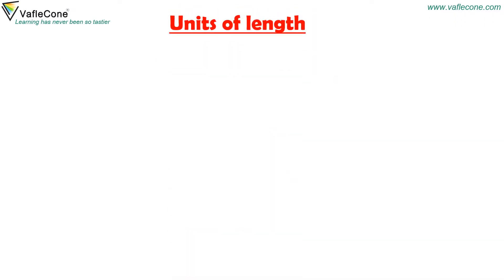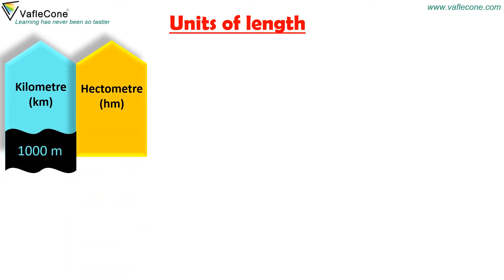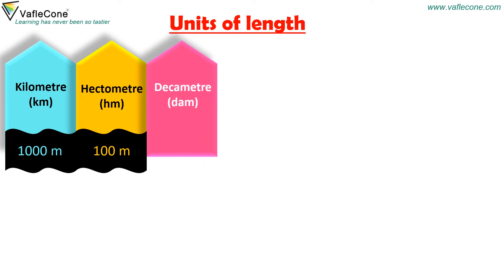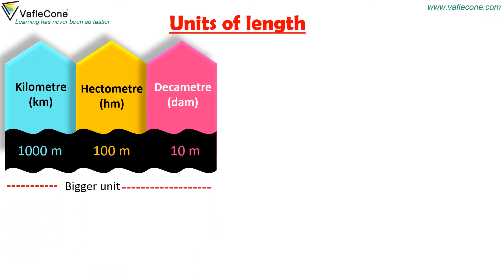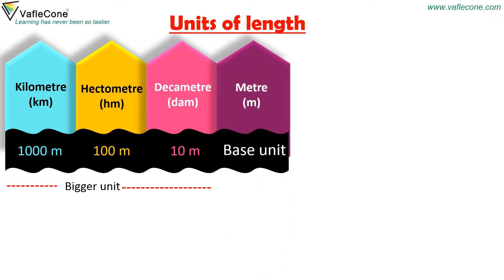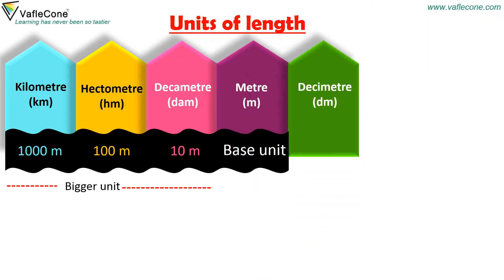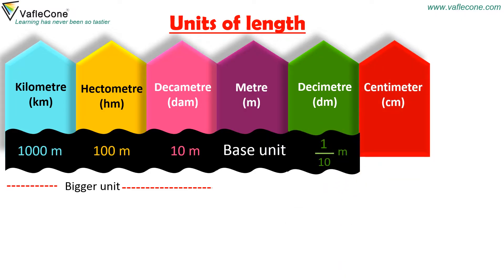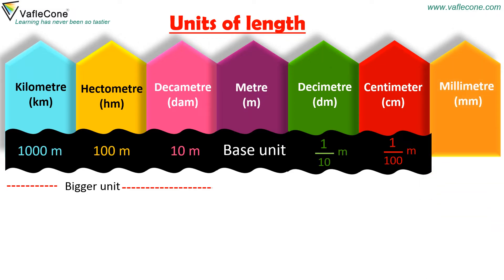Units of length. 1 kilometer is equal to 1000 meters, 1 hectometer is equal to 100 meters, 1 decameter is equal to 10 meters. These are bigger units. Meter is the base unit. 1 decimeter is equal to 1 tenth of a meter, 1 centimeter is equal to 1 hundredth of a meter, 1 millimeter is equal to 1 thousandth of a meter. These are smaller units.